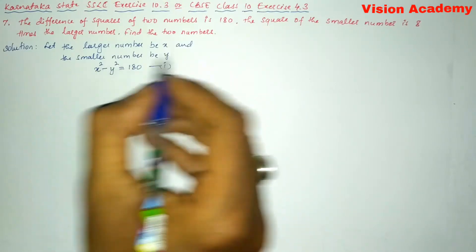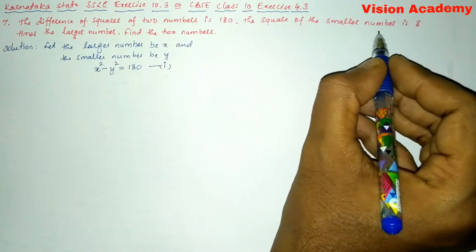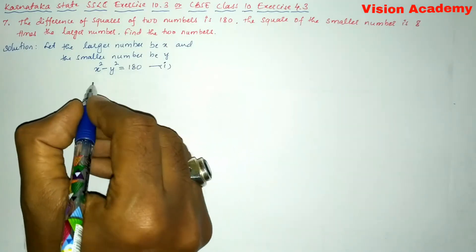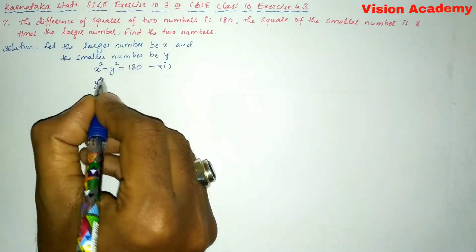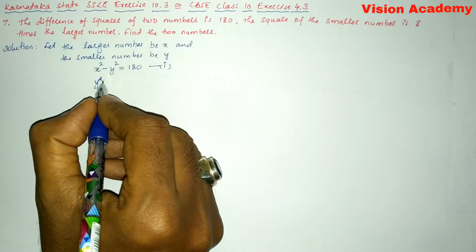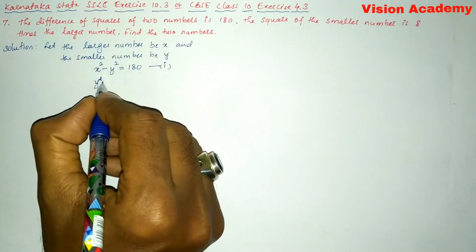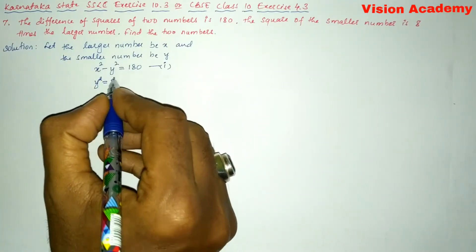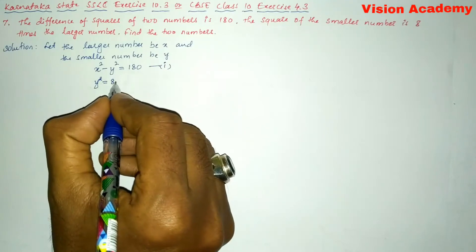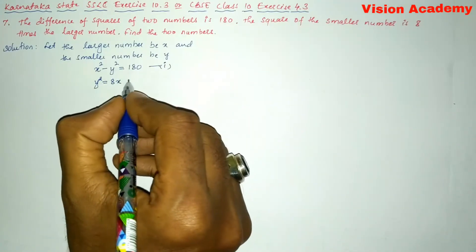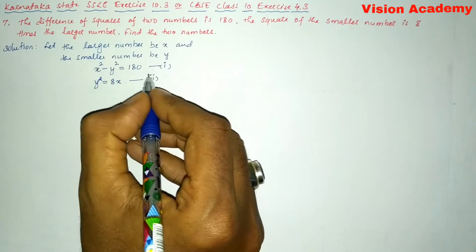Now we will write the square of the smaller number. The smaller number is y. The square of smaller number is eight times the larger number, which is 8x. So y² = 8x. Let us take this one as equation number two.